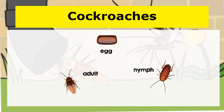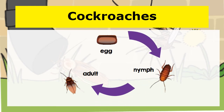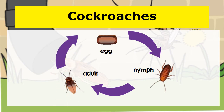The cockroach — remember, they have three stages. We start with the egg, then it goes to the nymph, then to the adult, and then we start all over again.